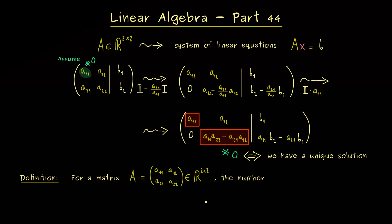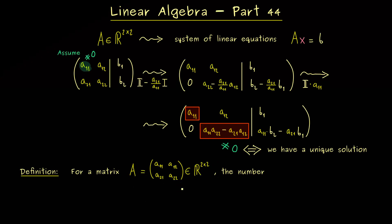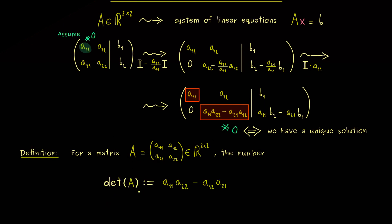Therefore, we will formulate the definition exactly in this sense. So we choose a general 2x2 matrix A. And then this number here is called the determinant of A. And usually we use this short notation here to represent the real number. And please recall it's given by a11 times a22 minus a12 times a21.